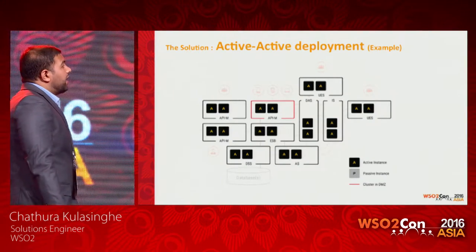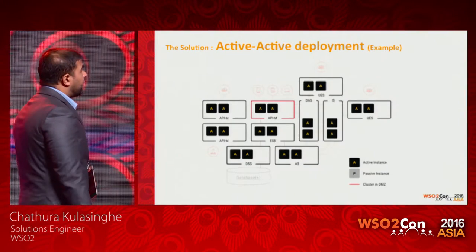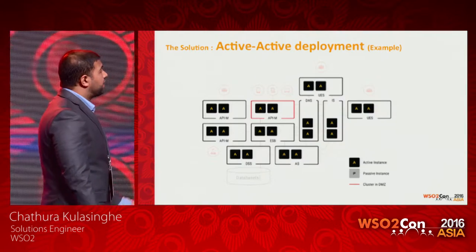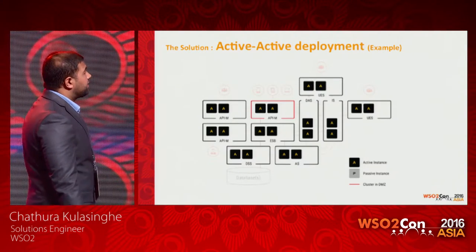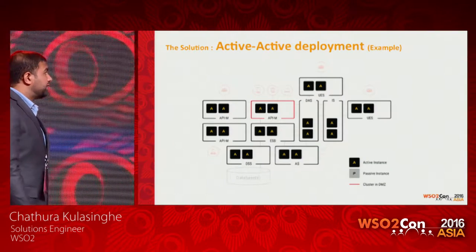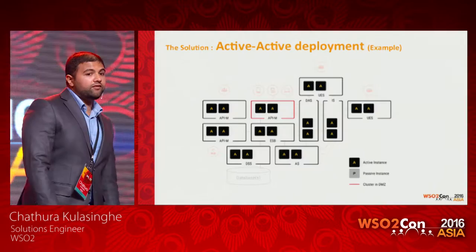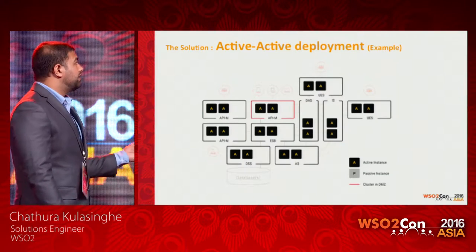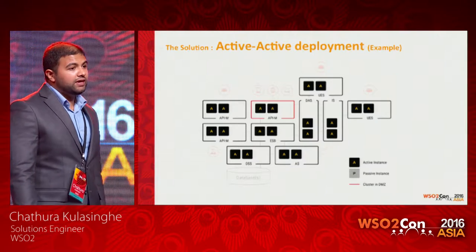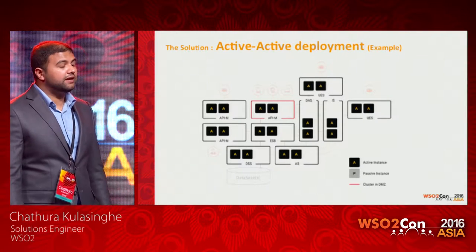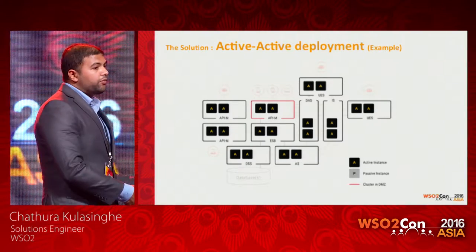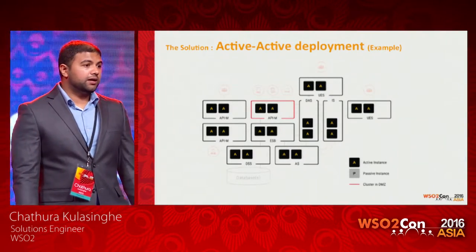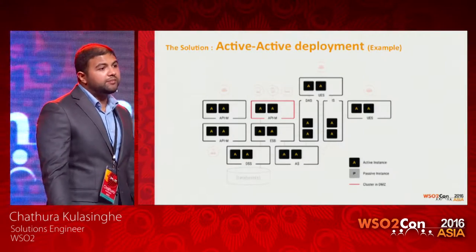This diagram also shows that the API Manager gateway — the API traffic handling component — is depicted as a cluster residing in the DMZ, indicated in red. When it comes to deployment, technically the API gateway handles externally generated traffic facing outside the internal network, so you have the capability of distributing this component across the LAN and DMZ depending on your requirements and best practices.